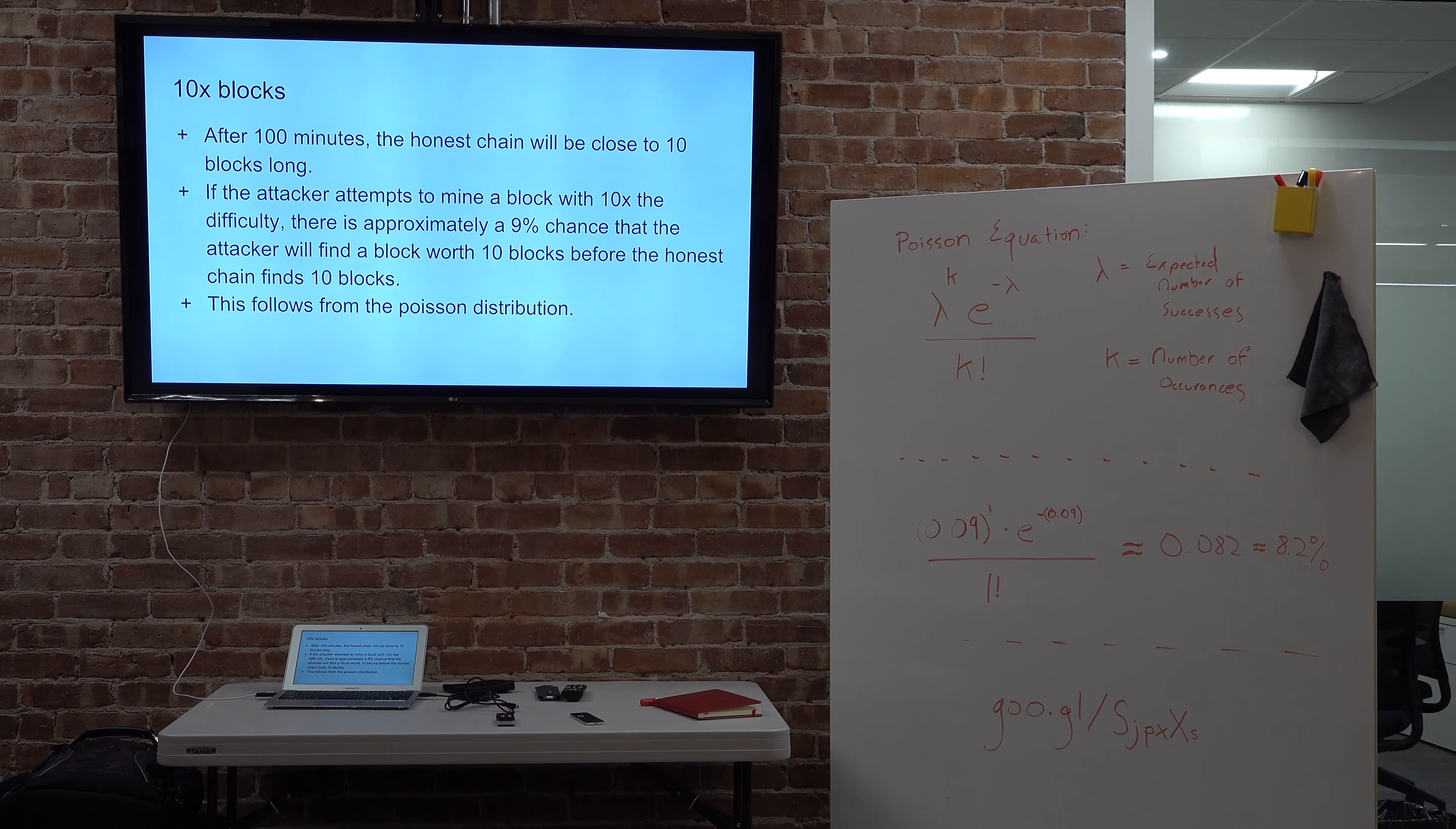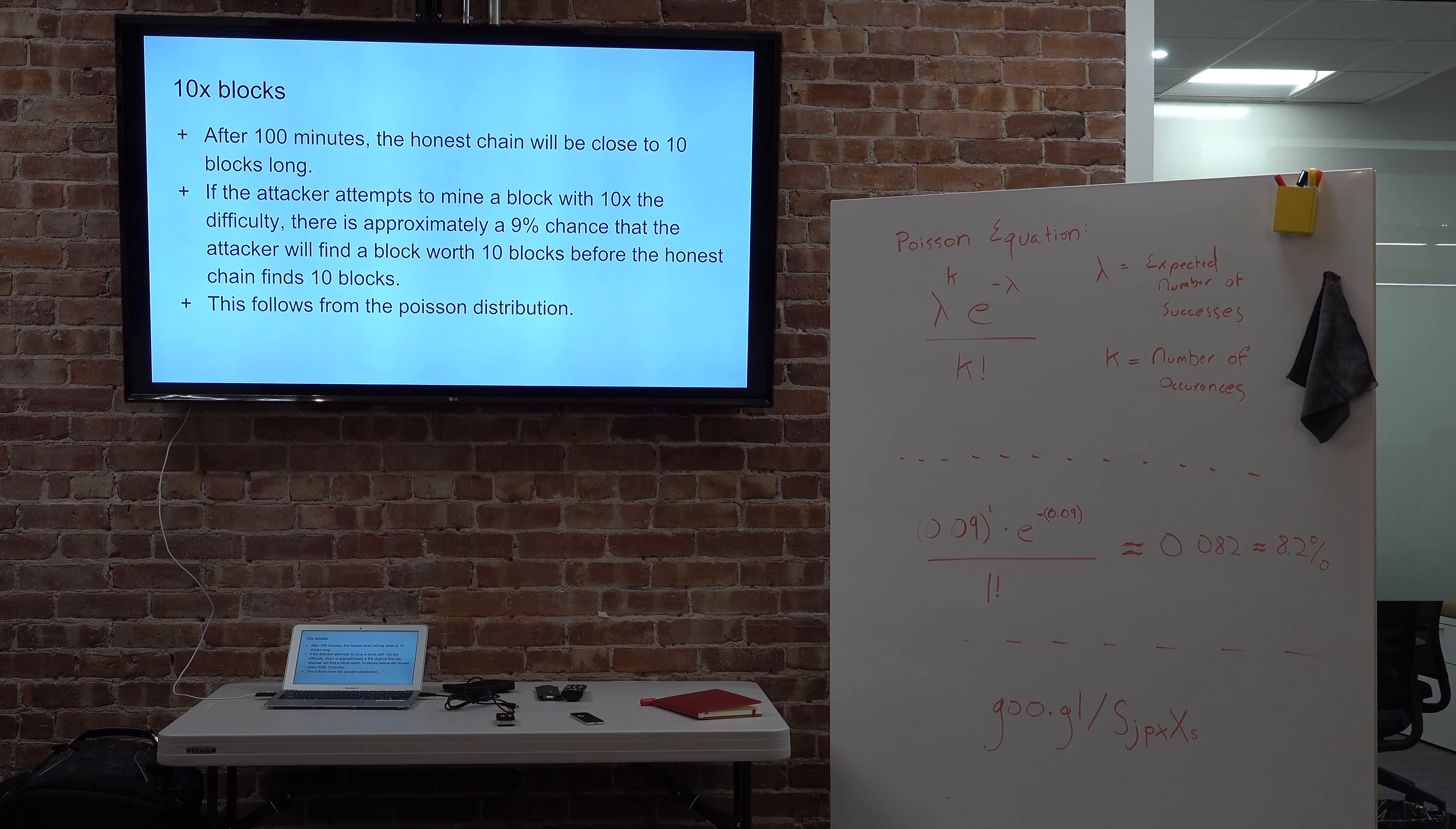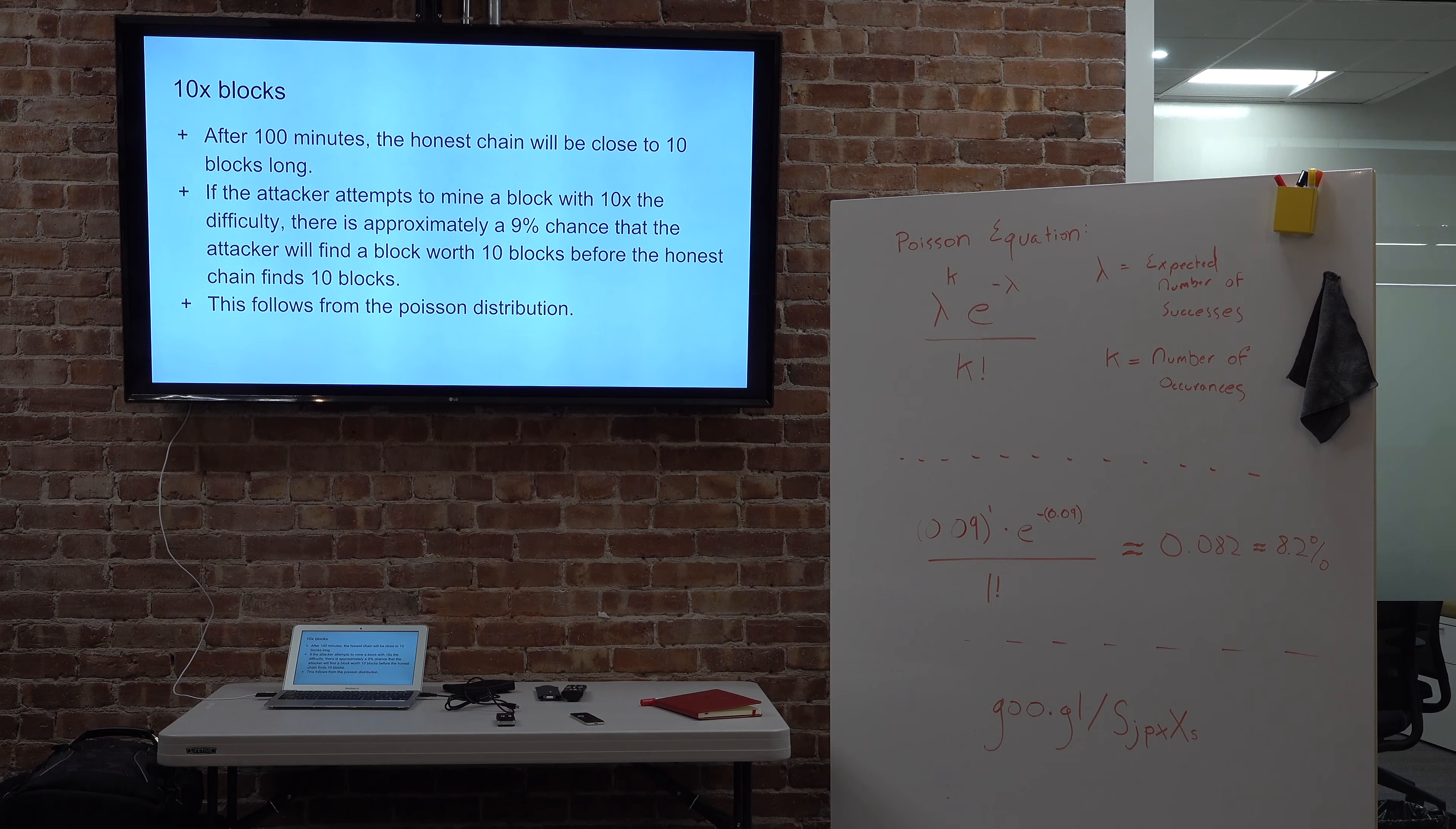So after 100 minutes, the honest chain will be, in expectation, will be ten blocks, maybe nine, maybe eleven, whatever. So what we're going to do as the attacker is instead of trying to mine ten blocks and keep up with the honest chain, we're going to mine one block. We can pick our own difficulty. So we're going to pick a block with a difficulty that is worth ten blocks, a 10x difficulty. So there's approximately a 9% chance that by the time 100 minutes have passed, we're going to have a 9% chance of finding a block that's worth ten blocks. And so if we do it soon enough, if we do it before the honest chain gets to ten blocks, we've won. We have the longest chain.